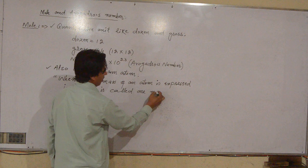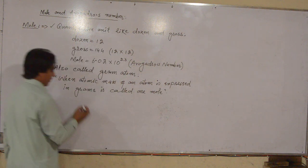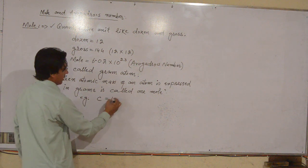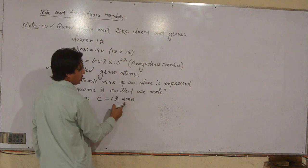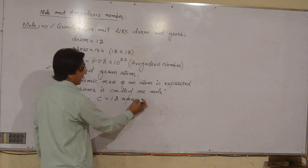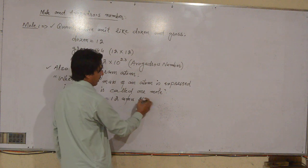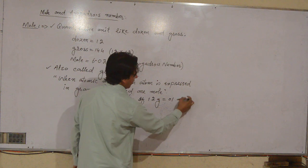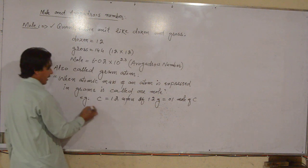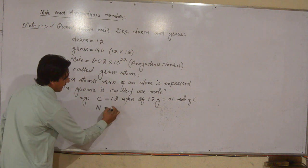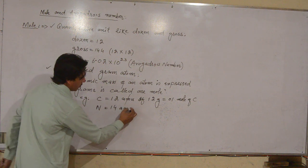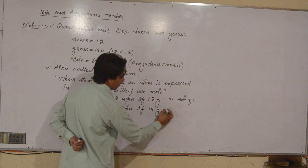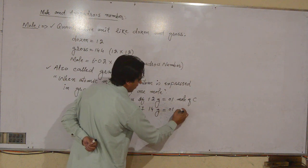it is called one mole of that atom. For example, carbon has an atomic mass of 12 amu. If represented in grams, 12 grams is equal to one mole of carbon. Similarly, nitrogen has an atomic mass of 14 amu, so 14 grams of nitrogen equals one mole of nitrogen.